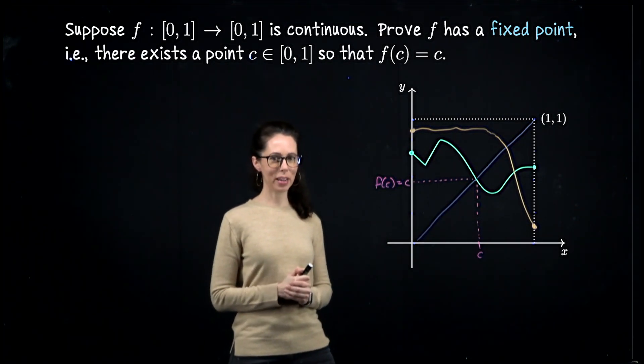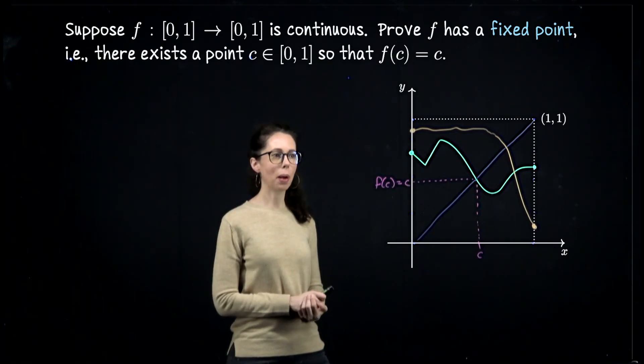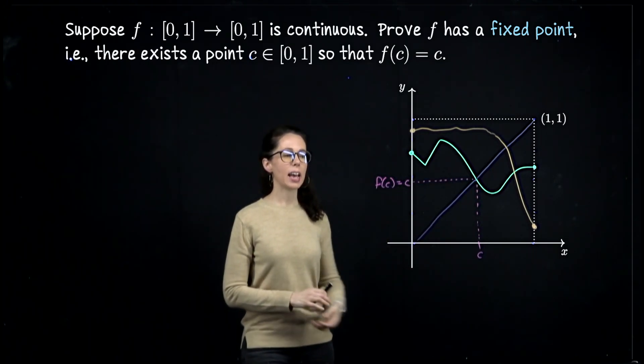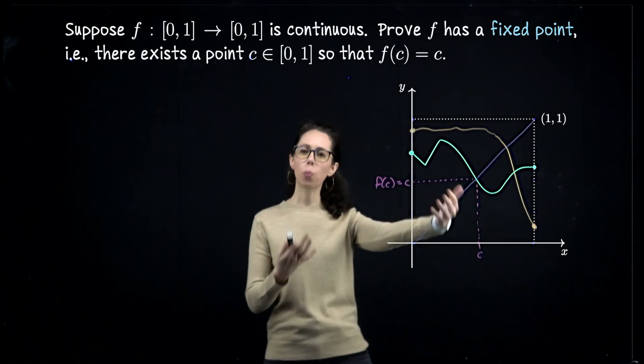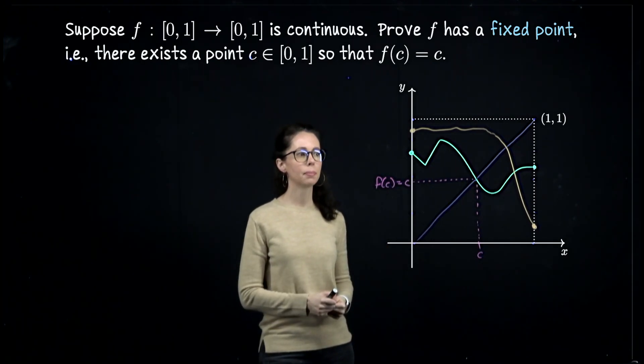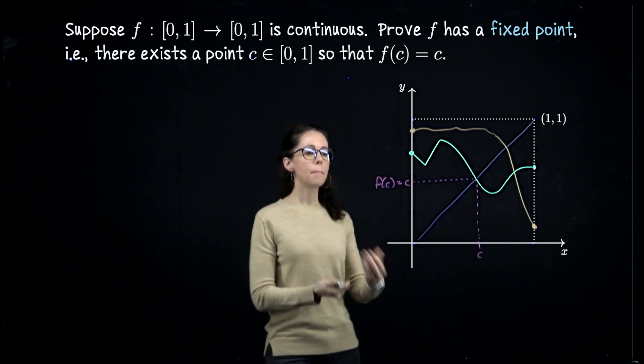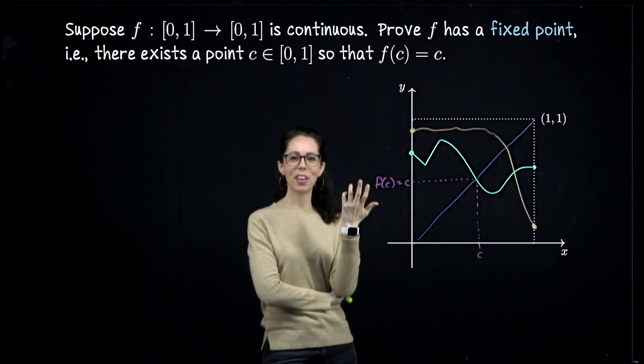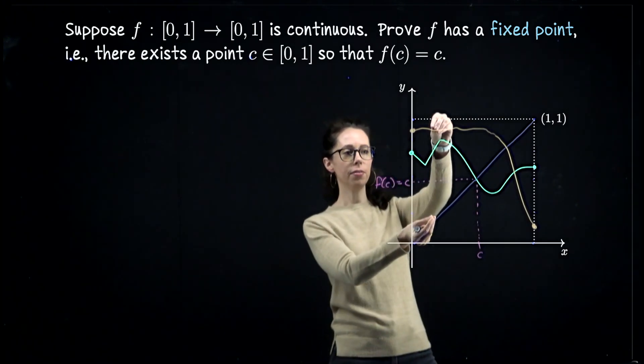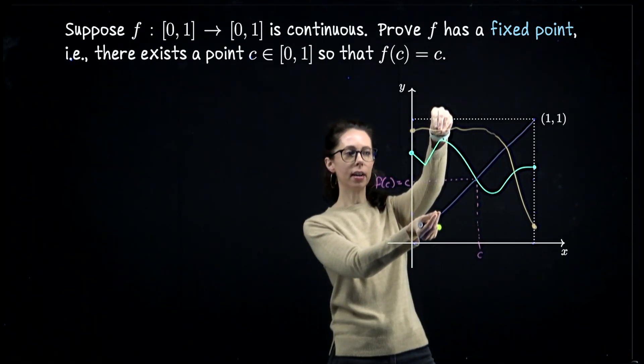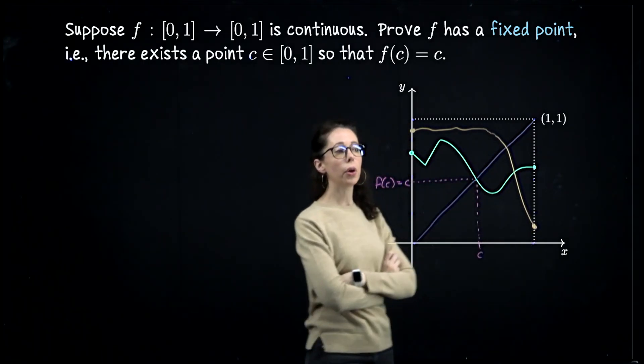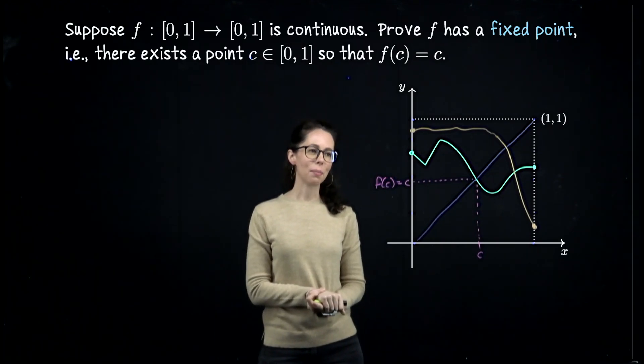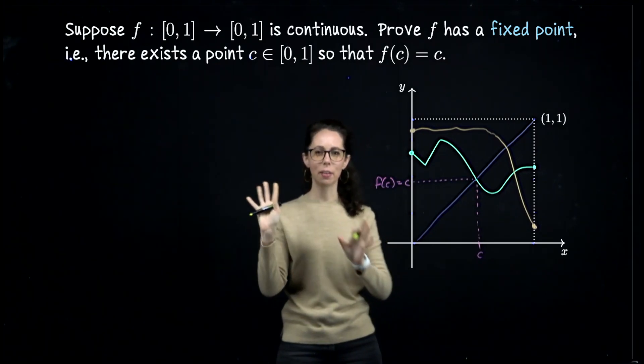If you figured out what function to apply the Intermediate Value Theorem to, that's great. If not, let me show you my thought process with this problem. I need to detect when my function crosses this line. Or not really when, because we aren't going to find the value c, but we need to show that such a crossing must happen. So I would like to come up with a function that measures whether f is, say, above y = x or below. So that will be the function that we will create. In our proof, we will introduce the function g(x) = f(x) - x.